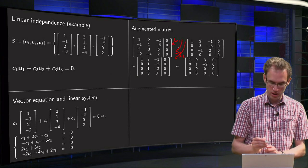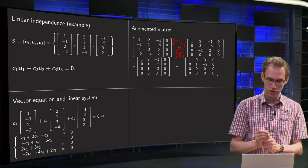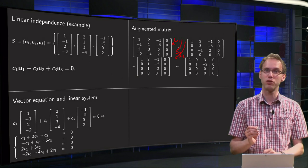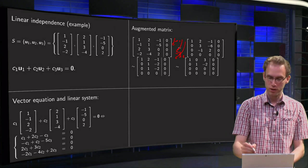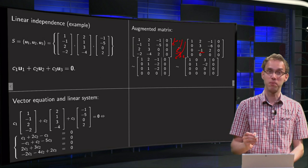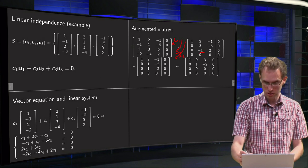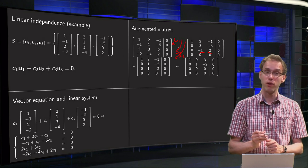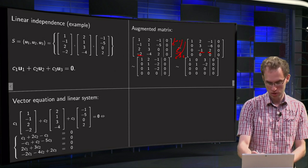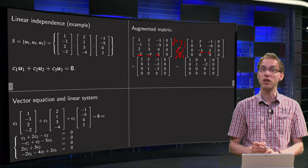For the third row we subtract the first row twice, so we get a 0 and then subtracting 4 yields minus 1, subtracting minus 2 means adding 2, so we get a 2. Adding the first row two times to the last row, you see all those numbers cancel out and we only have zeros.